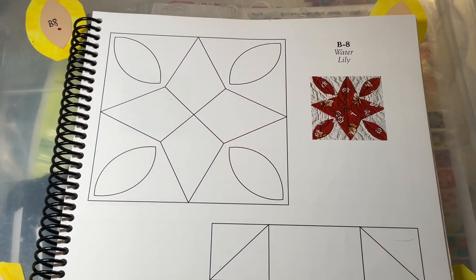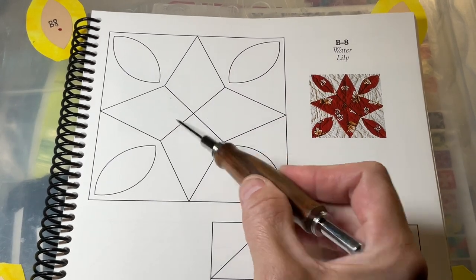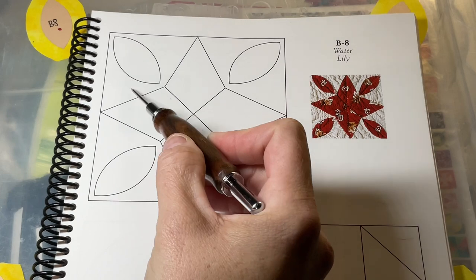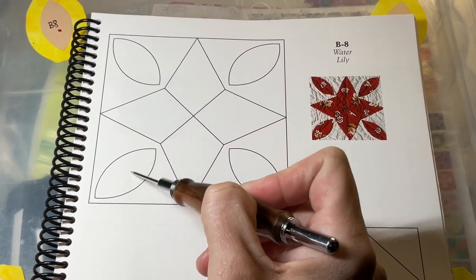This is B8 and B8 has two techniques featured in it. We have piecing and we have applique. So all these eight pieces in the background are pieced and then these are appliqued on.